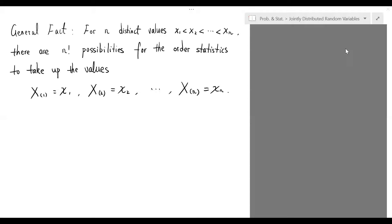Based on the observation that we have just made, we readily come to the following general fact. For n distinct values, x sub 1 less than x sub 2 less than all the way to x sub n, there are n factorial possibilities for the order statistics to take up the values, capital X sub 1 equals x sub 1, and all the way to capital X sub n equals x sub n.